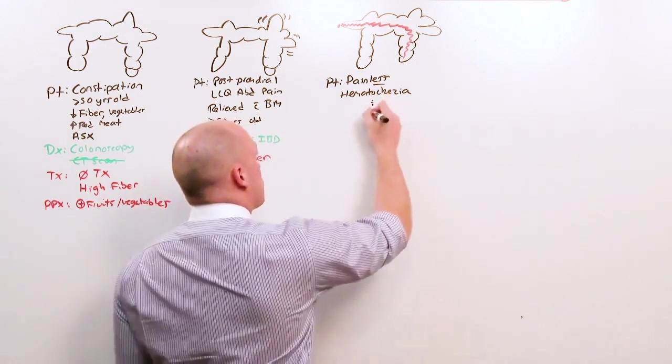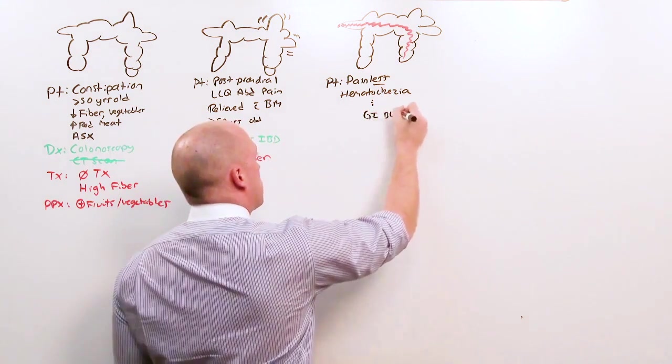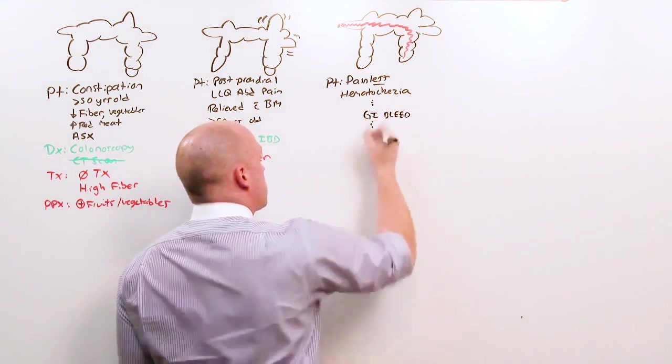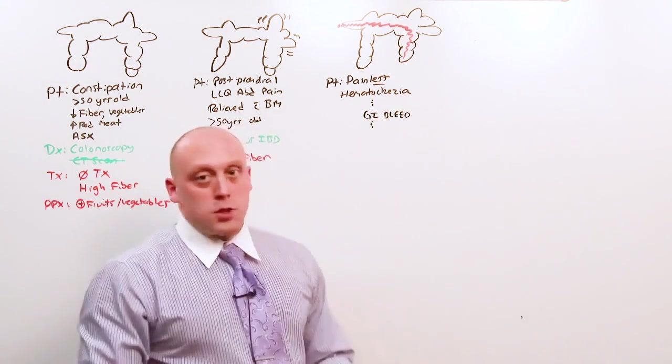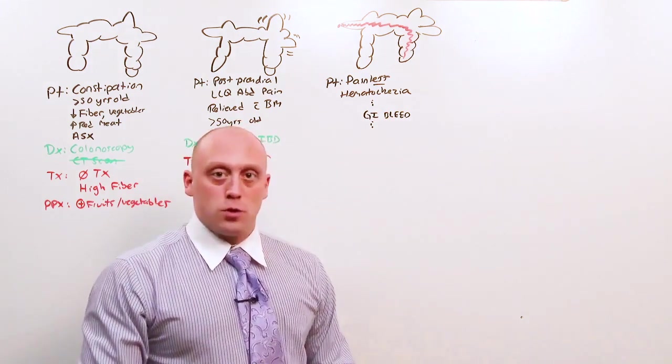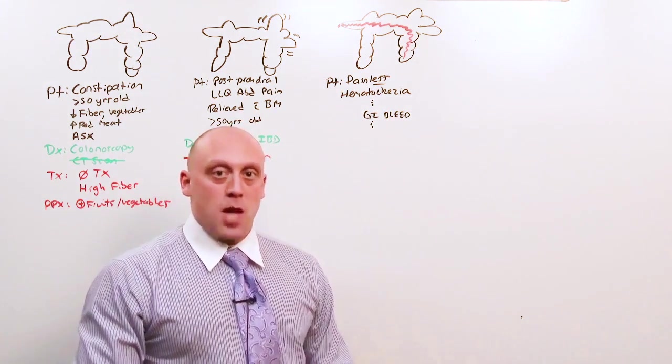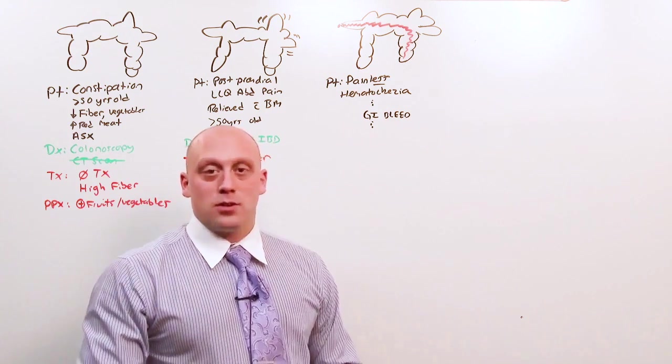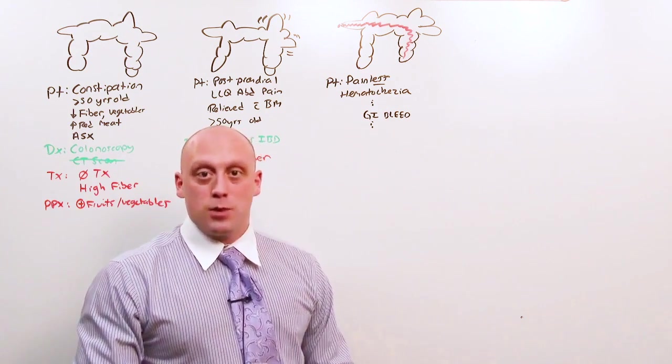So you're going to treat them like a GI bleed. You're going to give this person two large bore IVs, infuse them with normal saline or lactated ringers, type and cross transfuse as needed, call GI, and give them IV PPI.